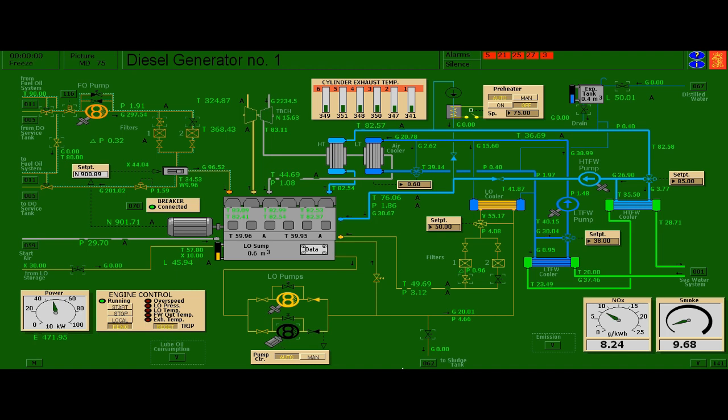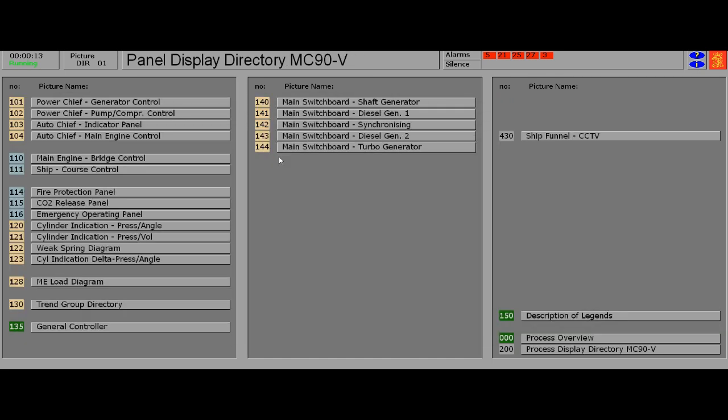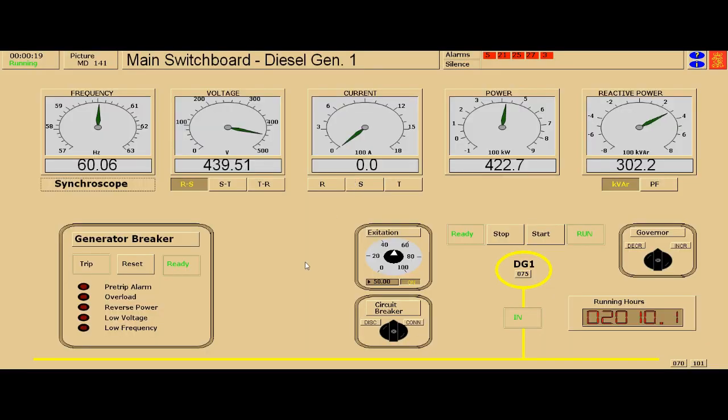As we can see here, the speed of our diesel generator one is around 900 RPM. Let us now check the frequency of the generated voltage. The voltage of this generator is around 440 volts with 60 hertz frequency as shown in the frequency meter. Let us now increase the frequency of this generator and observe the changes in RPM.